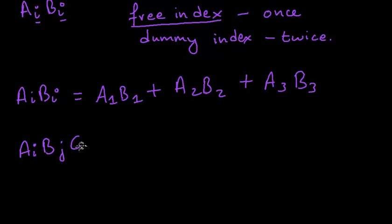For example, if you had a_i b_j c_j, then what you would have to do is: this is a free variable, i can take any value, it could be 1, 2, or 3. And this index has appeared twice, so it is a dummy index. It means we need to sum for all the j's.